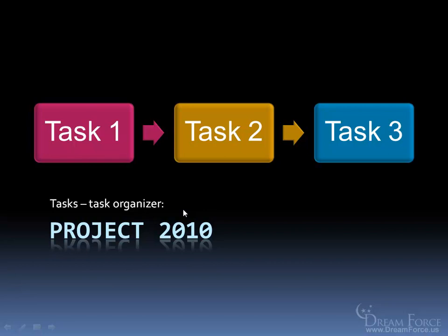A very basic and simple sample would be writing a book. For example, my first task would be to research the book, then next is to write the book, and then finally print the book. Now these tasks are linked up in a relationship, meaning I cannot start task 2 until its predecessor task 1 has been completed.